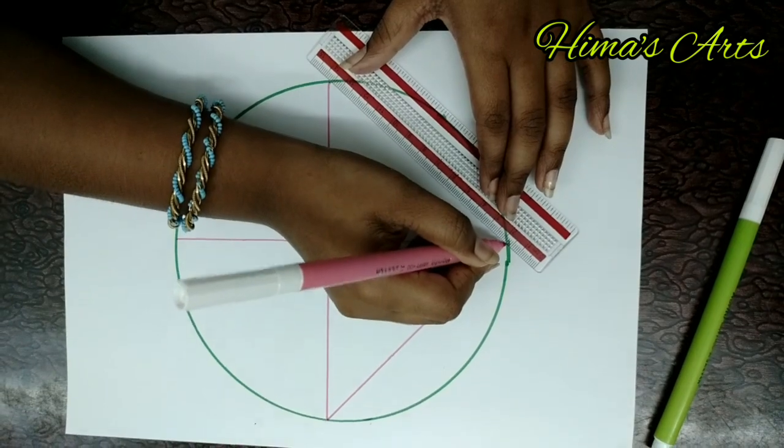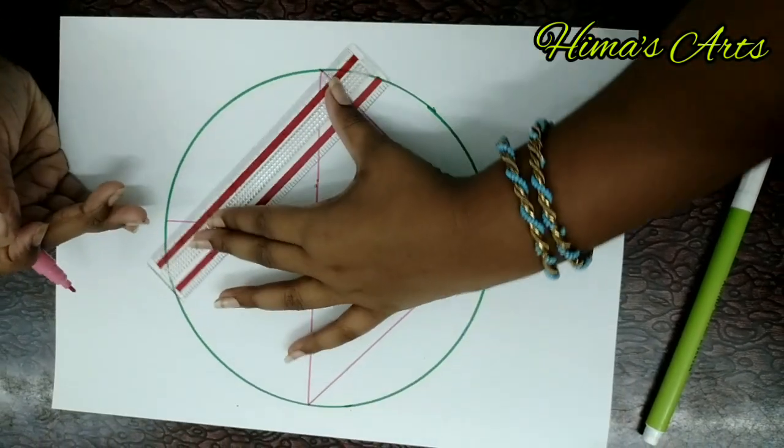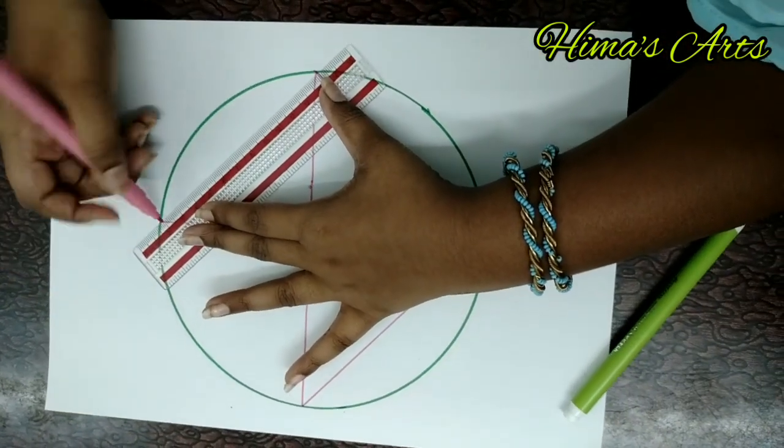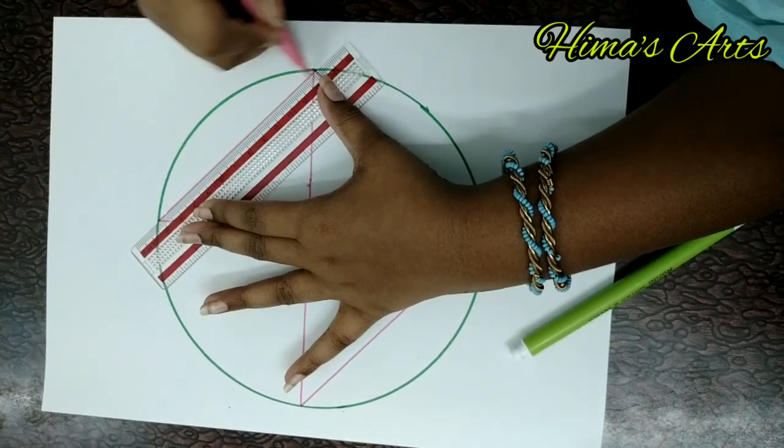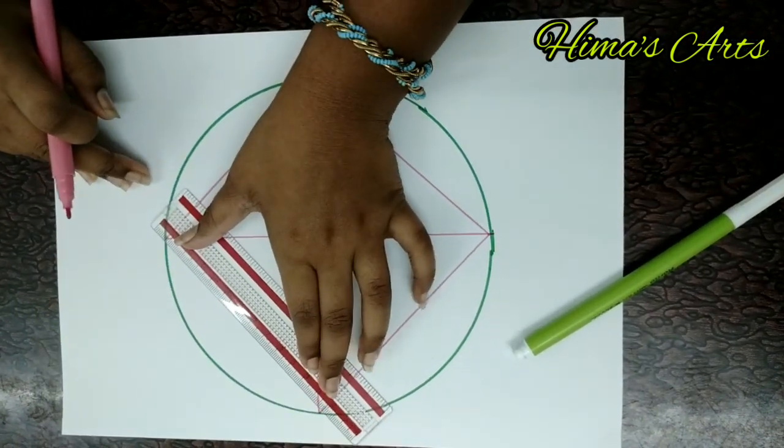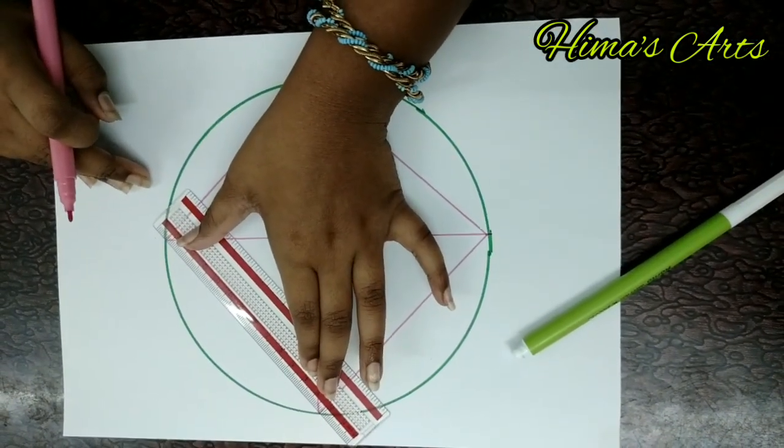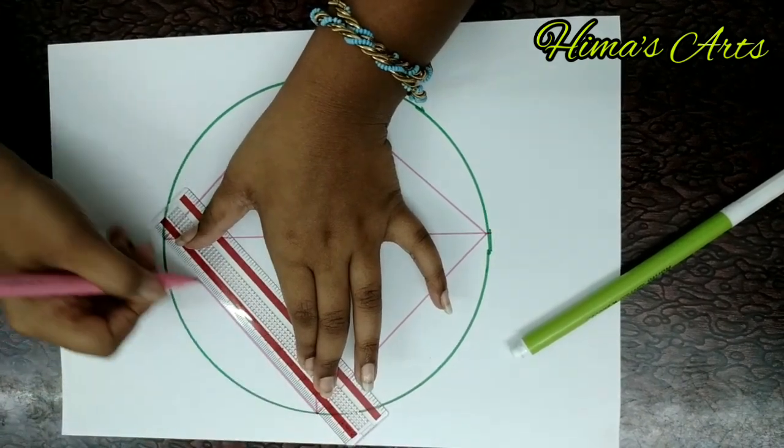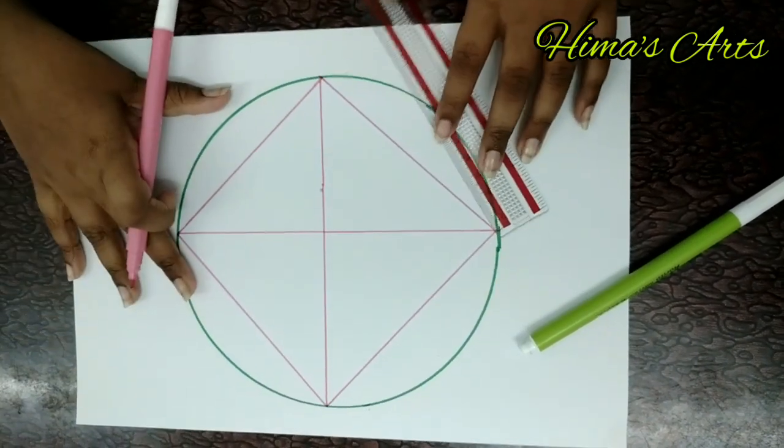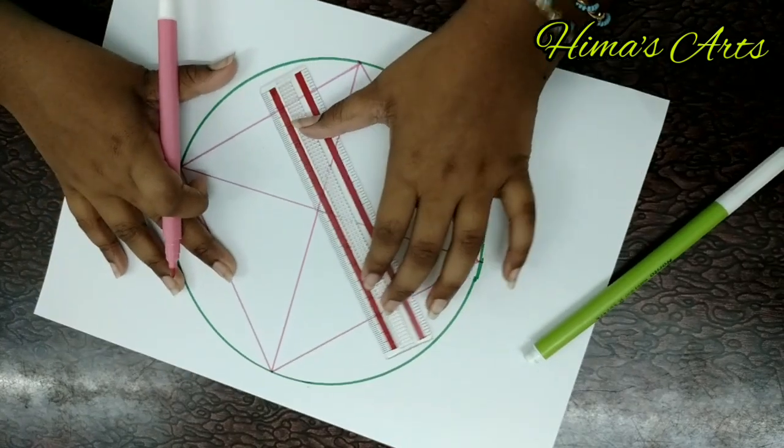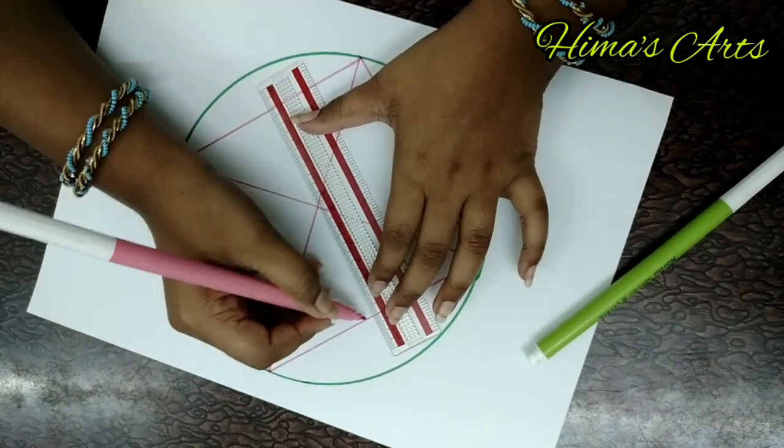It is very easy and simple drawing. After joining the circle lines, it will become a very beautiful diamond shape inside the circle. Now divide into eight triangles.